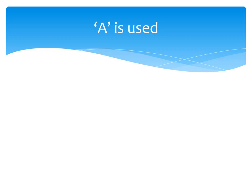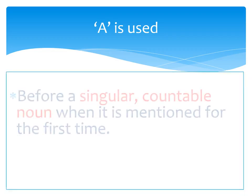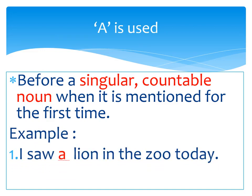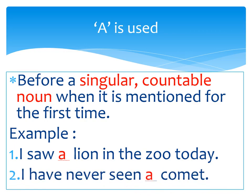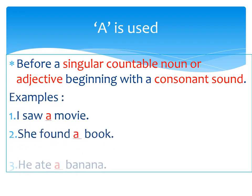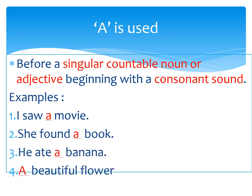First use of A: before a singular countable noun when it is mentioned for the first time. For example, 'I saw a lion in the zoo today' and 'I have never seen a comet.' Second use: before a singular countable noun or adjective beginning with a consonant sound. For example, I saw a movie, she found a book, he ate a banana, a beautiful flower, a tall girl.